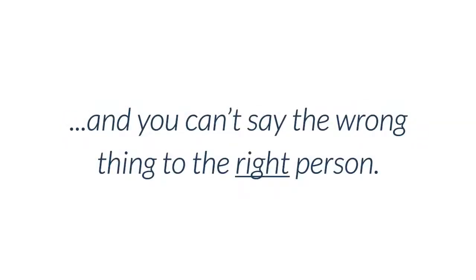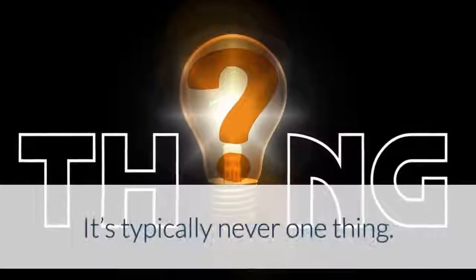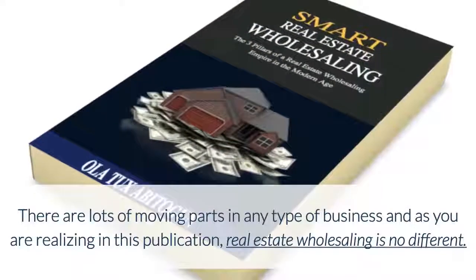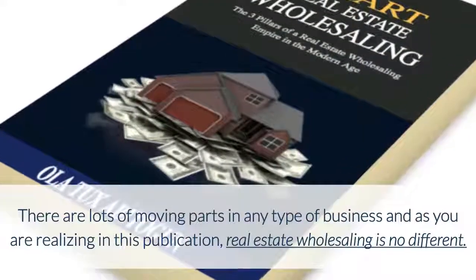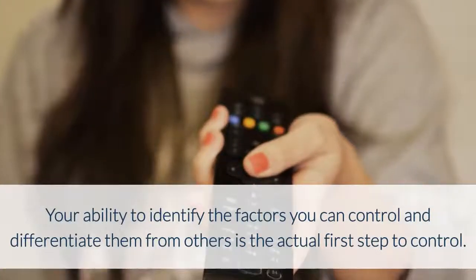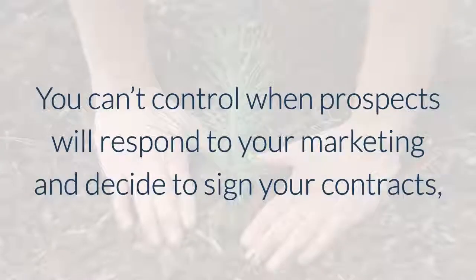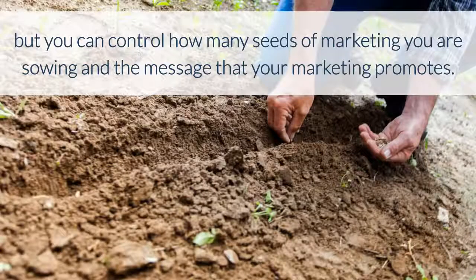In real estate wholesaling, what I have learned over the years is that you can't say the right thing to the wrong person, and you can't say the wrong thing to the right person. Often a deal will fall through and you may try to trace what went wrong — it's typically never just one thing. There are a lot of moving parts in any type of business, and real estate wholesaling is no different. All you can do is control what you can control and ignore the rest. Your ability to identify the factors you can control and differentiate them from others is the actual first step to control.